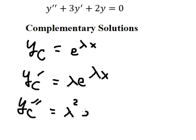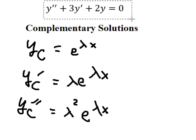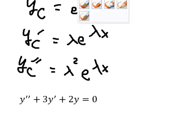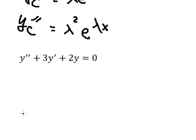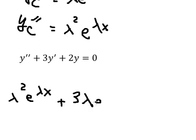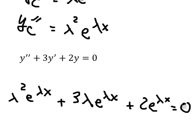Now let's go to the second derivative, which is lambda squared times e to the power of lambda x. I will substitute this one, this one, and this one into the equation, and then we can do factorization by e to the power of lambda x.